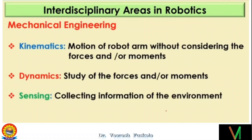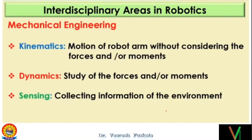In the mechanical regime, we'll have kinematics. In kinematics, we basically deal with the motion of the robot arm without considering the forces. So motion, position, and orientation — these are the three key words.